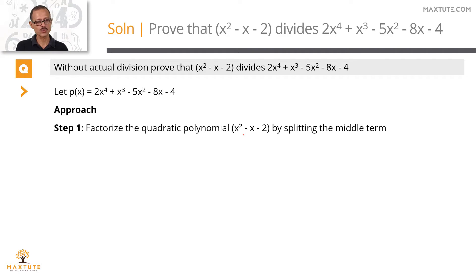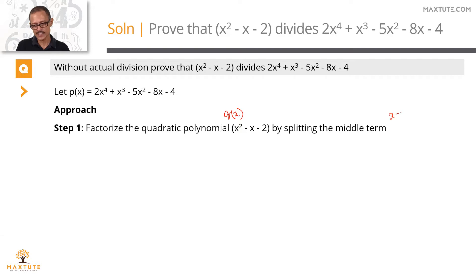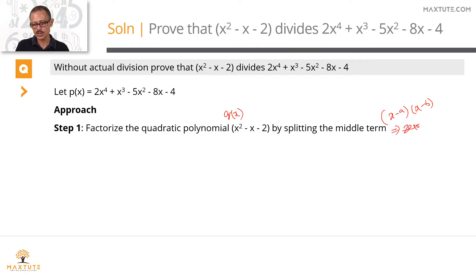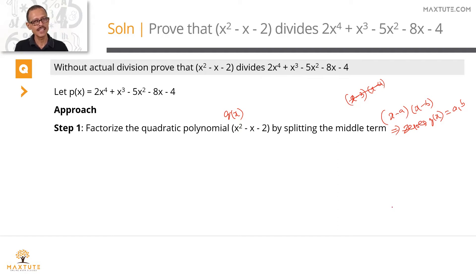Step 1: we're going to factorize this quadratic expression — let's call that q of x. q of x is the divisor, a quadratic expression. By splitting the middle term, we get it in the form x minus a times x minus b. The zeros of q of x will then be equal to a and b. For example, if it is x minus 3 times x minus 4, the zeros will be 3 and 4.